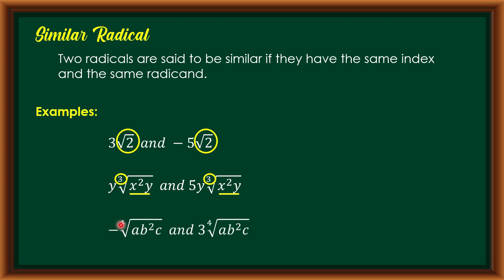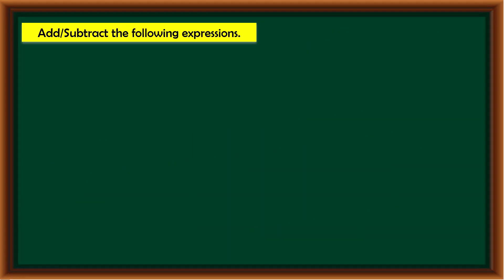Another example: -⁴√(ab²c) and 3·⁴√(ab²c) have the same index of 4 and the same radicand ab²c. Please take note of similar radicals, since when we add or subtract radical expressions, they should be written in similar radical form.